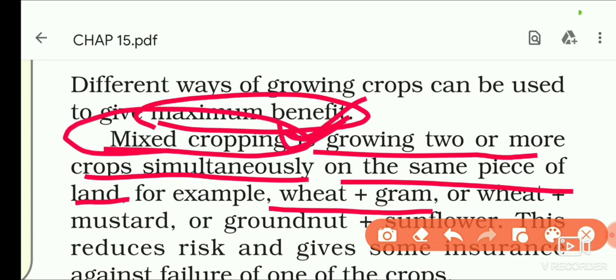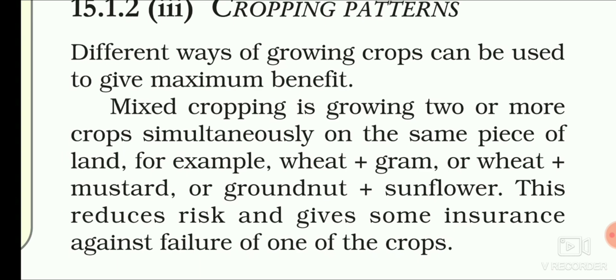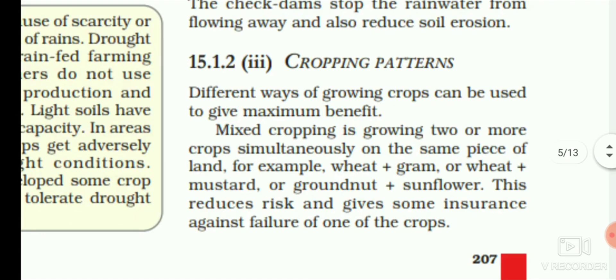Crops are wheat and mustard, or groundnut and sunflower. This reduces risk and gives some insurance against failure of one of the crops. What happens is the risk of crop failure reduces, and it gives insurance that it will not happen.